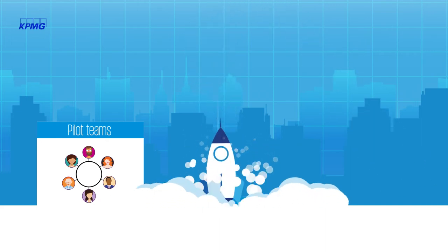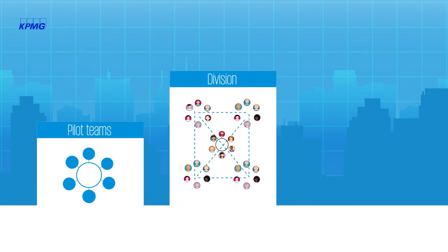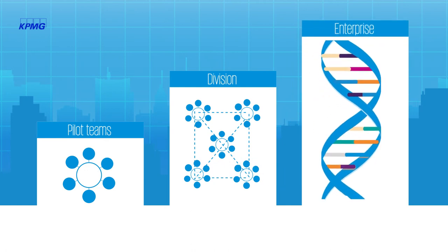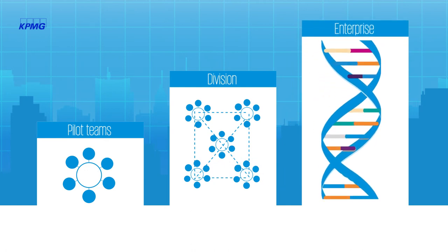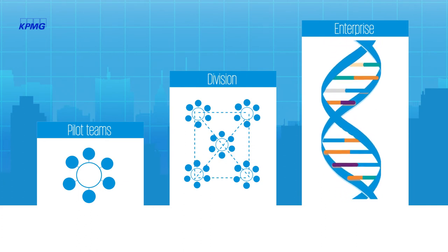The next step is to scale agile methods and principles across teams for a selective number of divisions. The final step is a full business-enabled agile transformation. Agility is incorporated at an enterprise level, which requires adopting agility in the DNA of the entire organization.